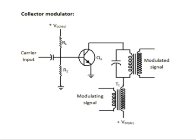When an audio signal is fed to transformer T1, it induces a voltage at the secondary. The induced voltage is added or subtracted from VCC depending on the phase at the instant of time. This means the collector supply for the transistor is not constant. With the change of collector voltage, the transistor output characteristics and the Q-point will change, causing the amplitude of the current pulses in the transistor to change. These current pulses cause the tuned circuit to oscillate at the desired output frequency.